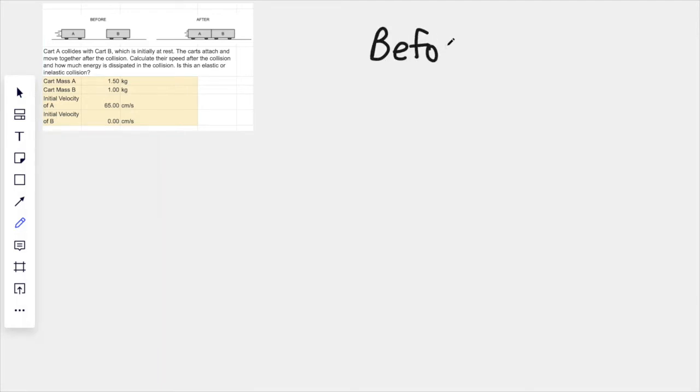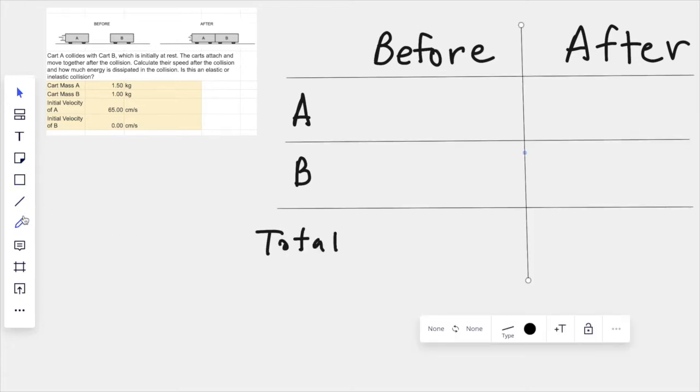That would be before collision and after collision, and then I've got cart A, cart B, and a total. So the other thing that we need to note is that the formula for momentum is quite simple - it's just mass times velocity. So for cart A, that was the cart that was moving in to the right from the left.